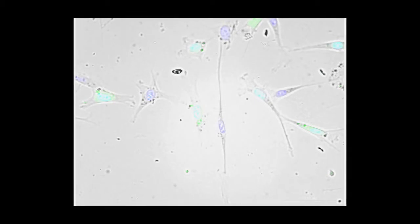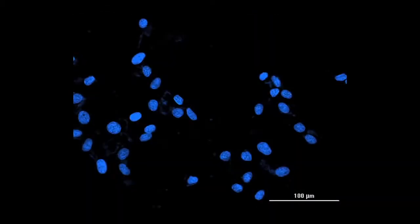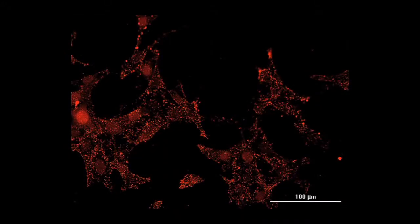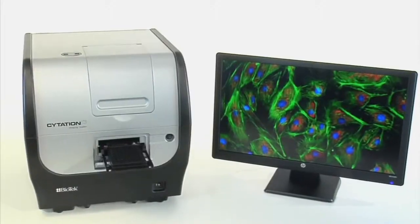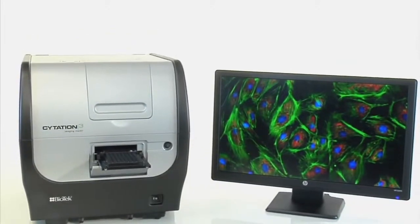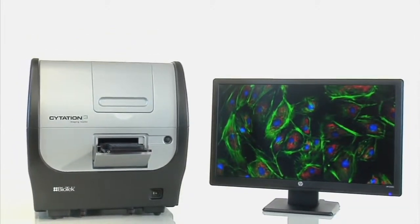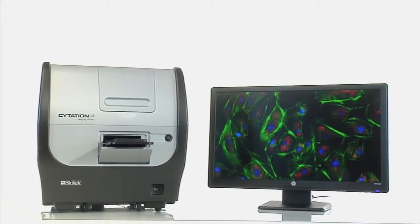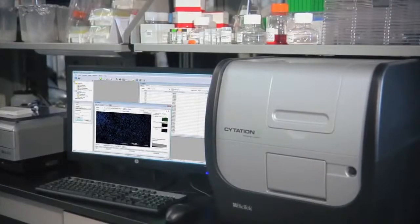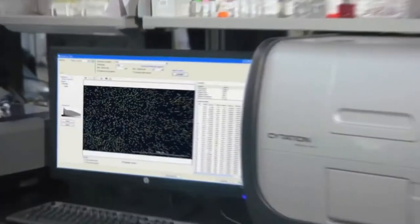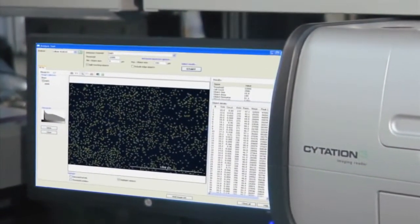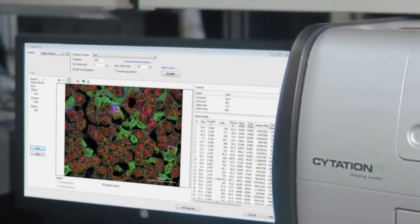Along with standard bright-field imaging, Citation 3 offers four-color fluorescence imaging. User-replaceable objectives are available in up to 60x magnification, covering a wide range of cell imaging applications, from cell counting or cell migration assays to analysis of intracellular details of very small structures, such as mitochondria.